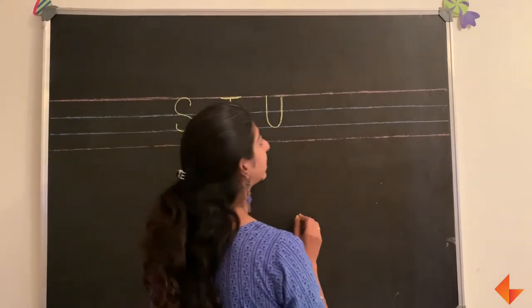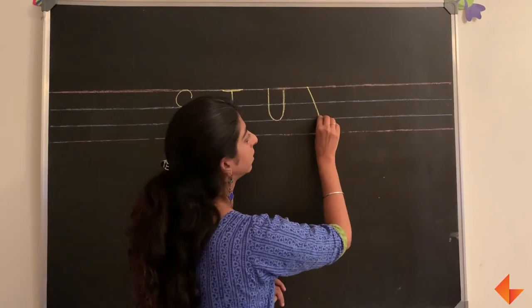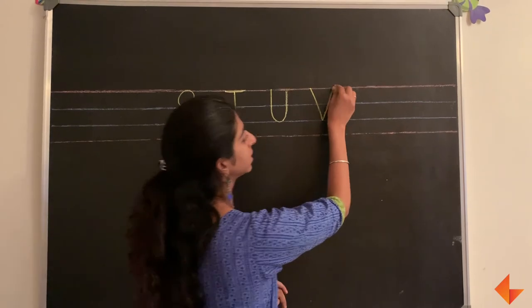To write the letter V, start from the top and draw a slanting line and draw another slanting line.